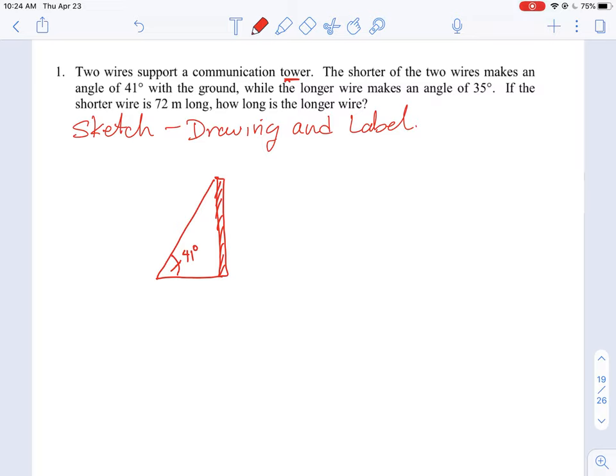The longer wire makes an angle of 35 degrees. That would make sense if the longer angle is 35 degrees because the wire is longer there. So we'll mark that in as 35 with two ticks. If the shorter wire is 72 meters long, we know the length of this. Now how long is the longer wire? We can call this side as X, that is what we need to find.